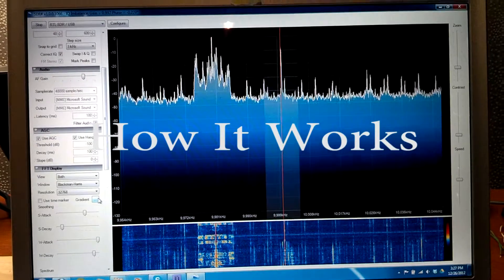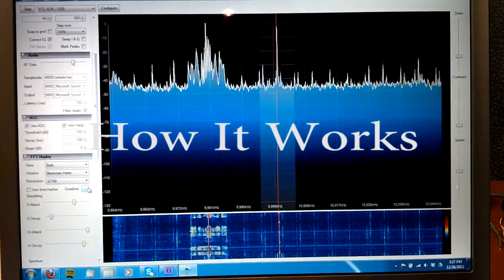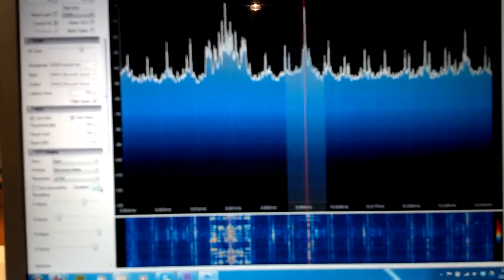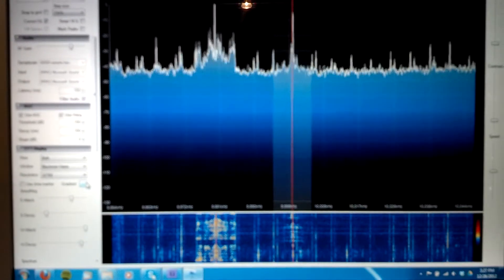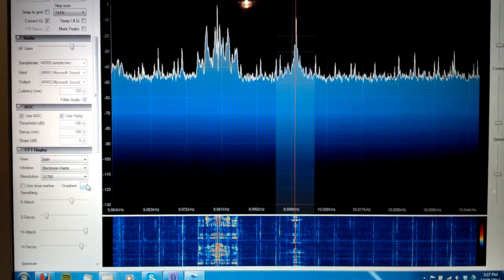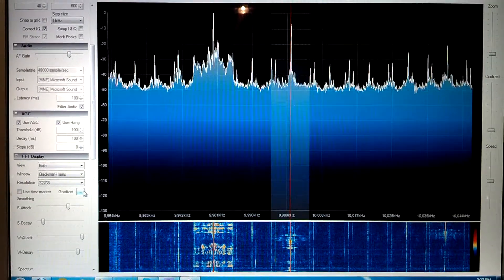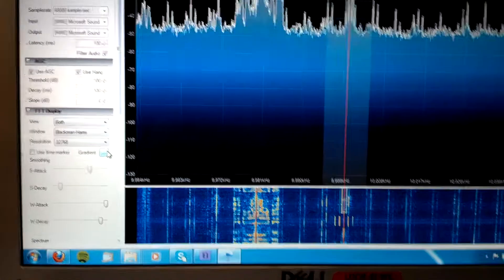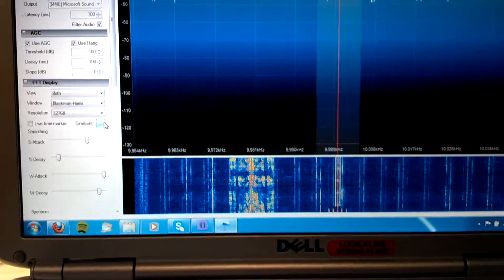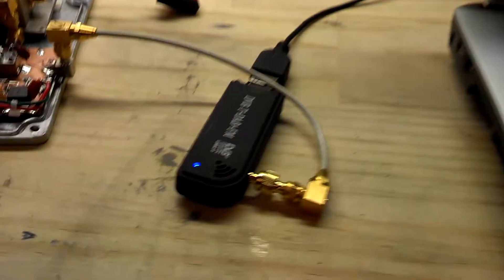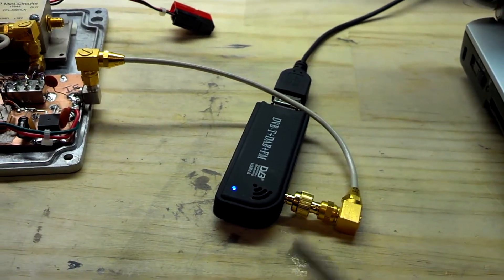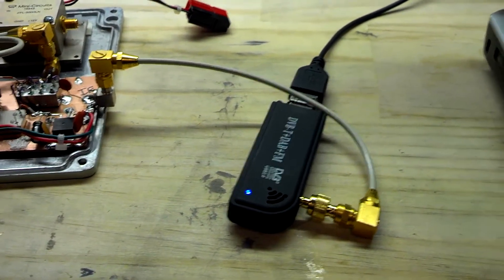Right now we're watching one of the WWB time stations on 10 megahertz. It's a US time station and also a frequency standard, so it's a good indicator that the radio is working. What I'm using to receive this is a DVB-T dongle, $20 on eBay, and it can only listen down to about 40 megahertz.